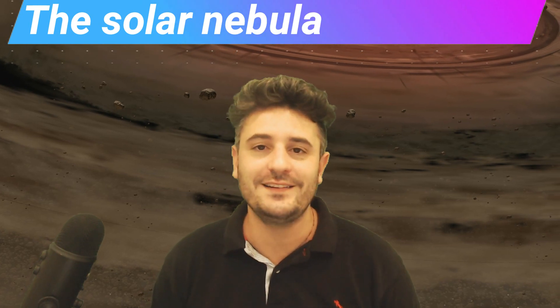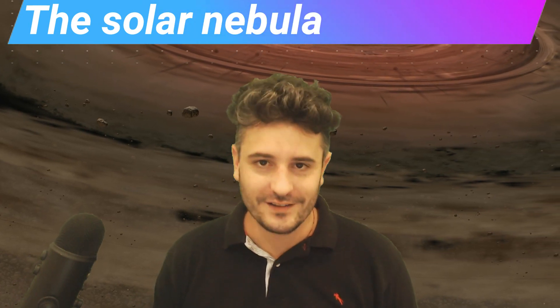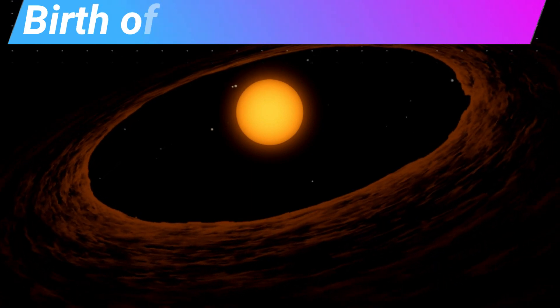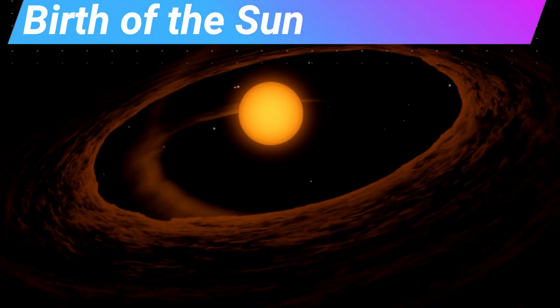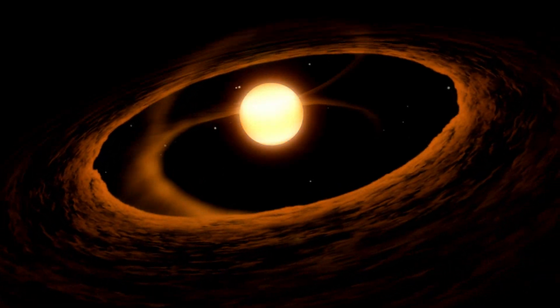Gravity began to contract the cloud into a quickly spinning disk called a solar nebula. As the solar nebula disk continued to contract, gravity got stronger and stronger, and rotation became faster and faster. After 50 million years, 99.8% of the mass in our solar nebula became concentrated in the center, and we call this dense sphere of matter a protostar. Suddenly, the immense gravity and heat in this protostar sparked a fusion reaction, and our Sun was born.